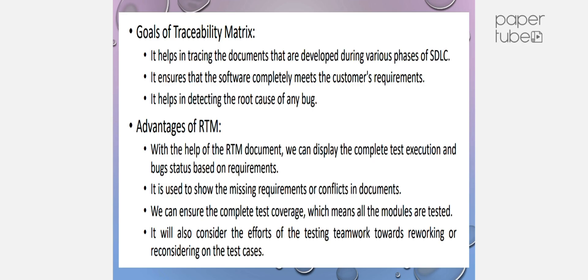It helps in tracing the documents developed during various phases of SDLC — Software Development Life Cycle. It ensures that the software completely meets the customer's requirements and helps in detecting the root cause of any bug. With the RTM document, we can display complete test execution and bug status based on requirements. It is used to show missing requirements and any conflicts in the document. We can ensure complete test coverage, meaning all modules are tested, and it also reduces reworking efforts for the testing team.